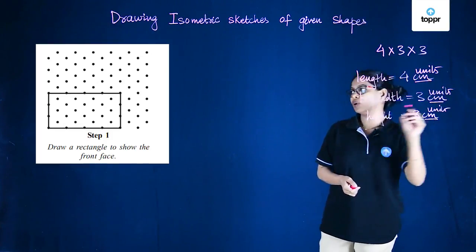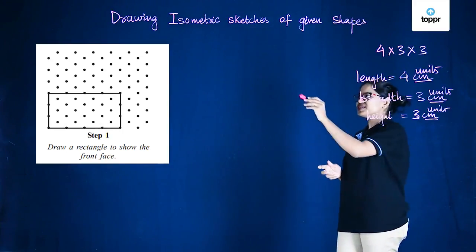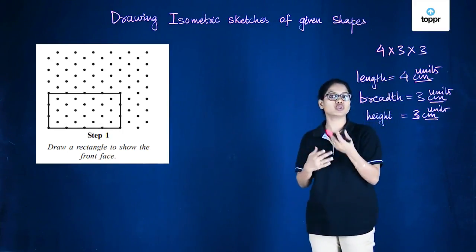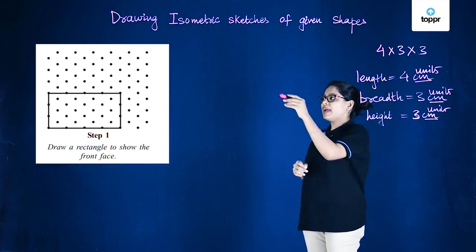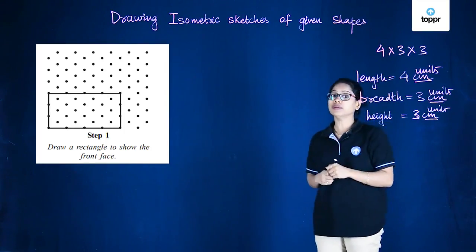When we are drawing, we are counting the distance between any two dots as one unit. So here is the front face of the cuboid that we want to draw and the dimensions are 4 by 3 for this particular rectangle.